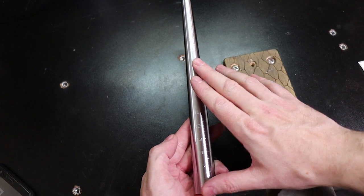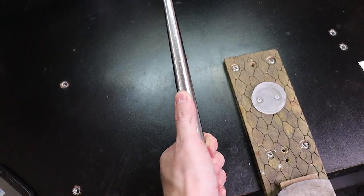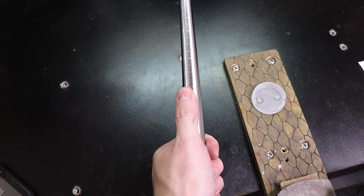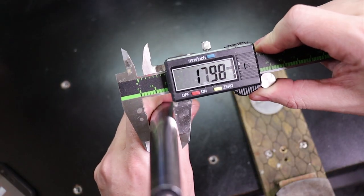The first thing you need to do is figure out what ring size you're making. I'm going to be making a size 8, so I'll take my mandrel and calipers and measure that out. It's about 18 millimeters.